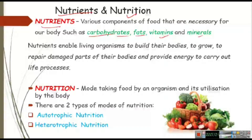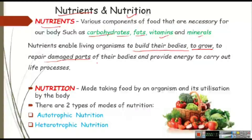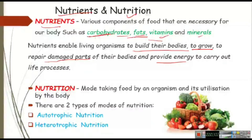Nutrients help us build our bodies — it is not only applicable for plants but also necessary for animals. Just imagine, were you born with the same size as you are now? No, you have grown. Every child grows, and for growing we always need nutrients. Nutrients also help repair damaged parts — if you cut your finger, your body heals it, and for that healing we need different types of nutrients. Most importantly, nutrients give us energy. That's why we are advised to have a balanced diet which contains all nutrients in a definite proportion.